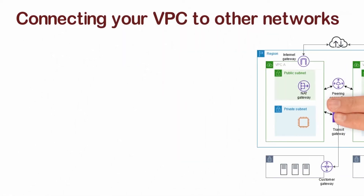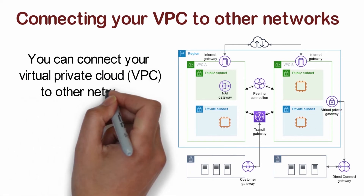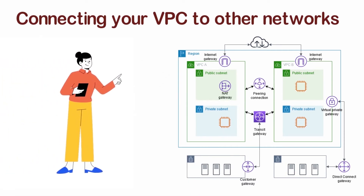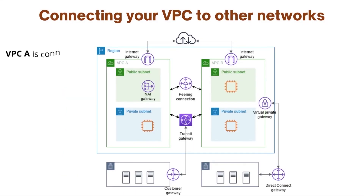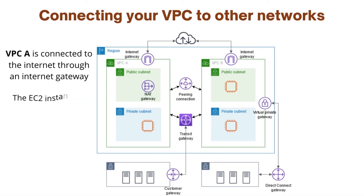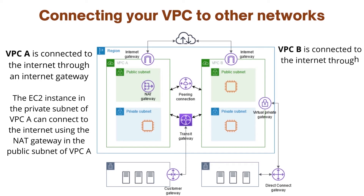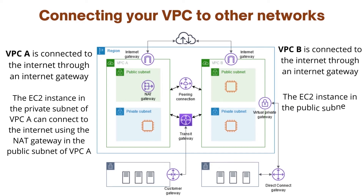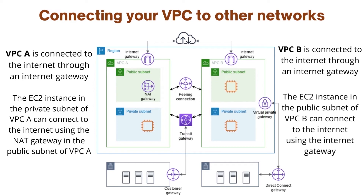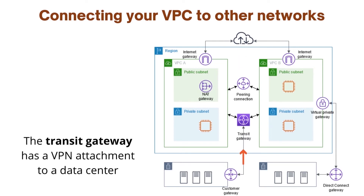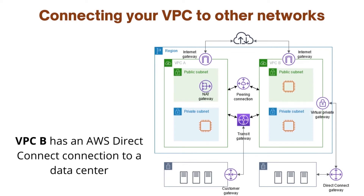Connecting your VPC to other networks: you can connect your VPC to other networks, such as other VPCs, the internet, or your on-premises network. VPC-A is connected to the internet through an internet gateway; EC2 instances in its private subnet connect to the internet using the NAT gateway in the public subnet of VPC-A. VPC-B is connected to the internet through an internet gateway, and EC2 instances in its public subnet connect directly via that gateway. VPC-A and VPC-B are connected to each other through a VPC peering connection and a transit gateway. The transit gateway has a VPN attachment to a data center, and VPC-B has an AWS Direct Connect connection to a data center.